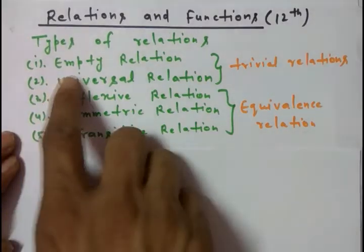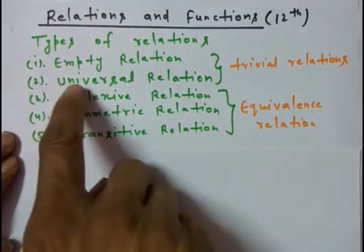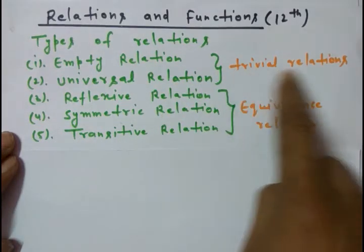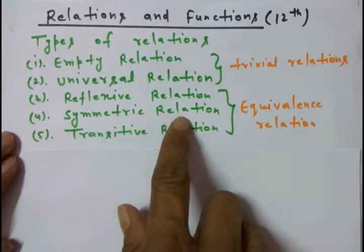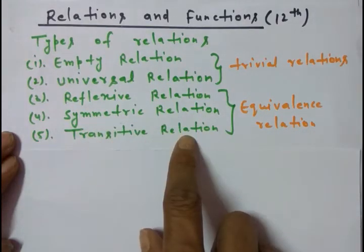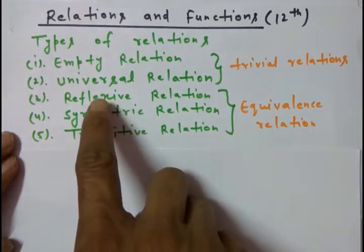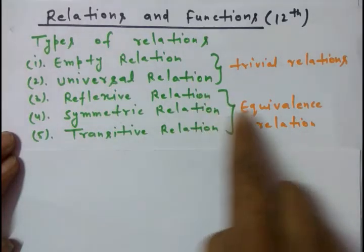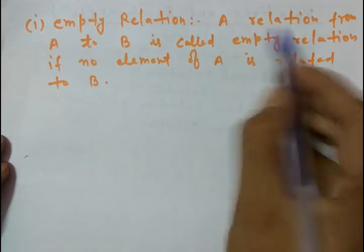Mainly we have to study about empty relations and universal relations. Empty relations and universal relations are also known as trivial relations. We also have reflexive relations, symmetric relations, transitive relations, and a relation which is reflexive, symmetric as well as transitive is known as an equivalence relation.